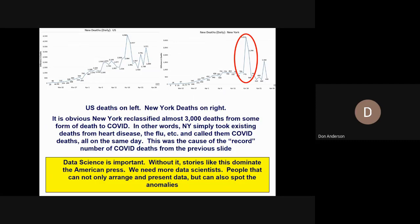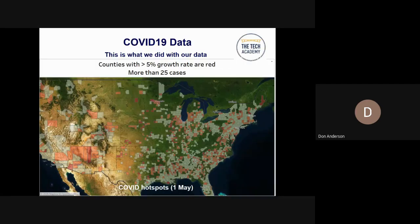The takeaway is that data science is important. Without it, stories like this dominate the American press. We need more data scientists — people who can not only arrange and present data, but can also spot the anomalies. Here's one of the views from our webpages: COVID hotspots as of this morning. The deep red areas are where COVID cases are increasing by more than 5% day over day with at least 25 minimum cases. You can see it spreading up into Maine, Rhode Island or eastern Connecticut, and southern New Hampshire.